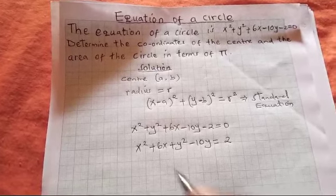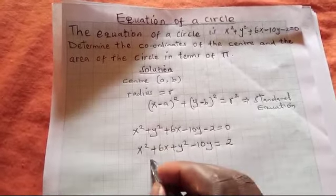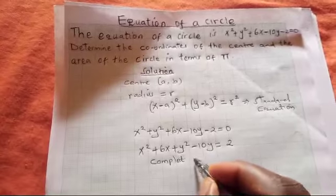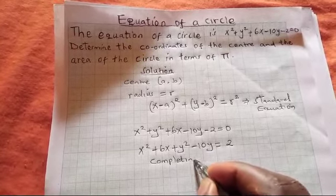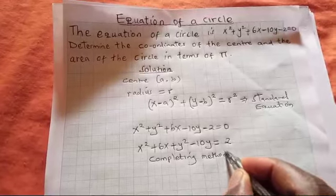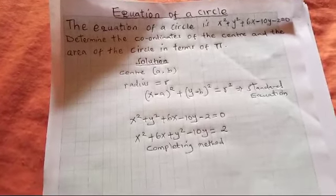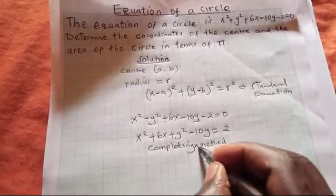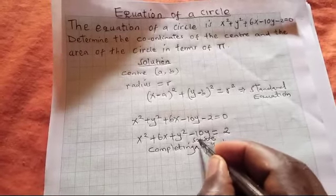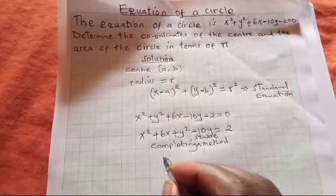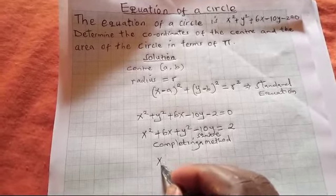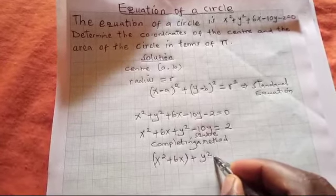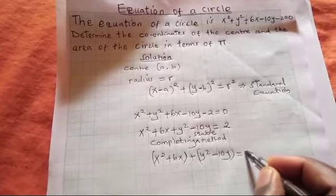Now the next thing is to complete the square. We are going to use the completing the square method to put things in order. We will have x squared plus 6x plus y squared minus 10y equals 2.